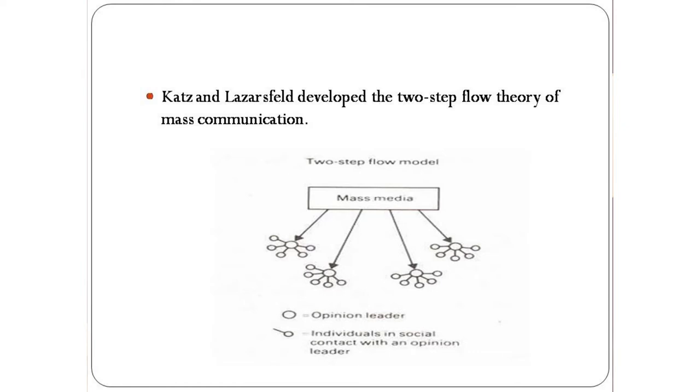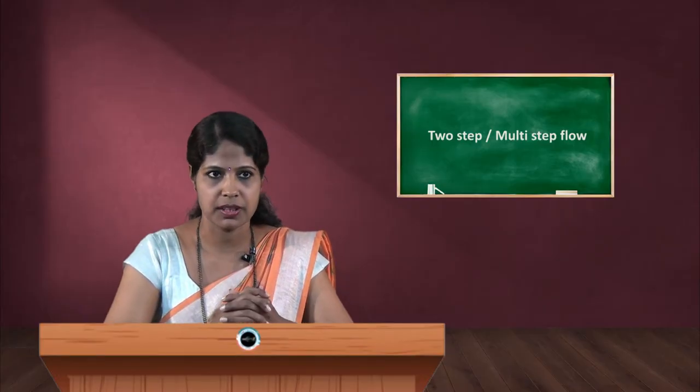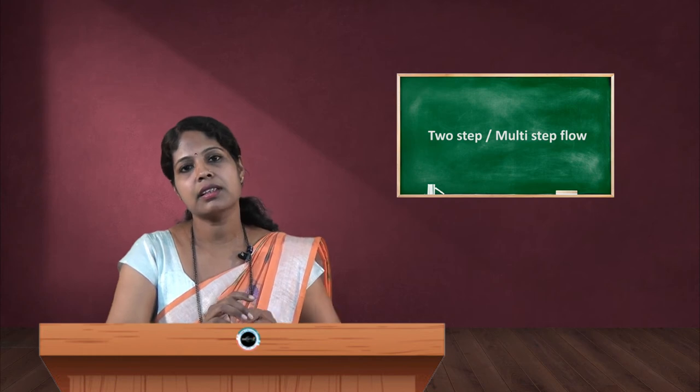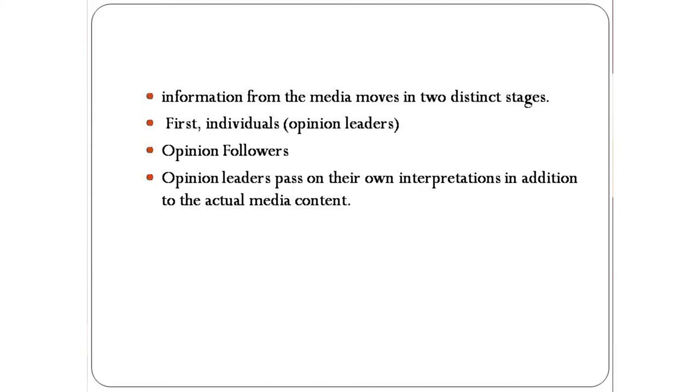Information from the media moves in two distinct stages. First, individuals or opinion leaders receive messages from mass media, and then it is disseminated by opinion leaders to opinion followers. Opinion leaders pass on that information with their own interpretation in addition to the actual media content.